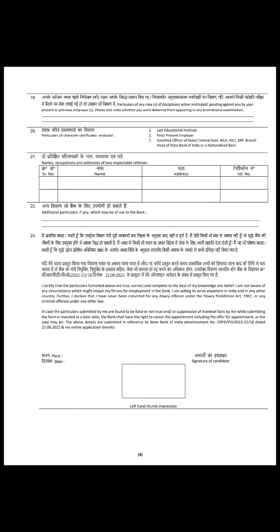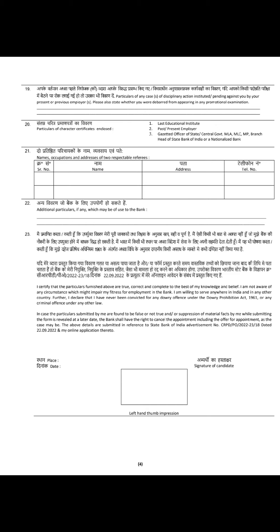20th point में उन्होंने character certificate के लिए कहा है। आपको दो character certificates produce करने हैं - एक किसी educational institute का होना चाहिए या किसी past या present employer का, या किसी gazetted officer का। मैंने दो gazetted officers से लेकर produce किए थे क्योंकि college वाला 6 months से ज़्यादा पुराना हो गया था। 6 months से ऊपर का college या school का character certificate invalid होगा, इसलिए नया बनवा लीजिए या दो gazetted officers से attest करवा सकते हैं।